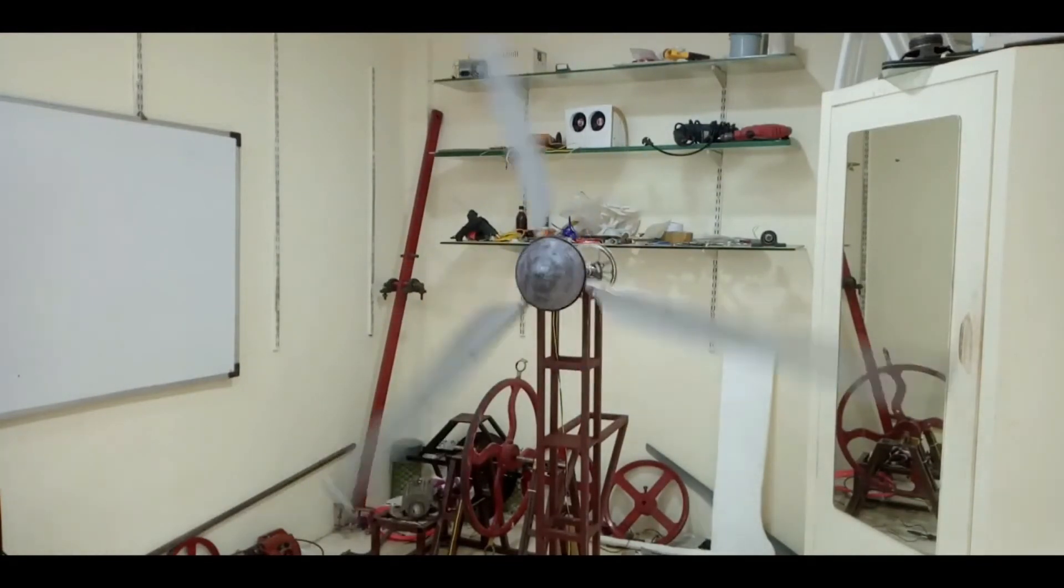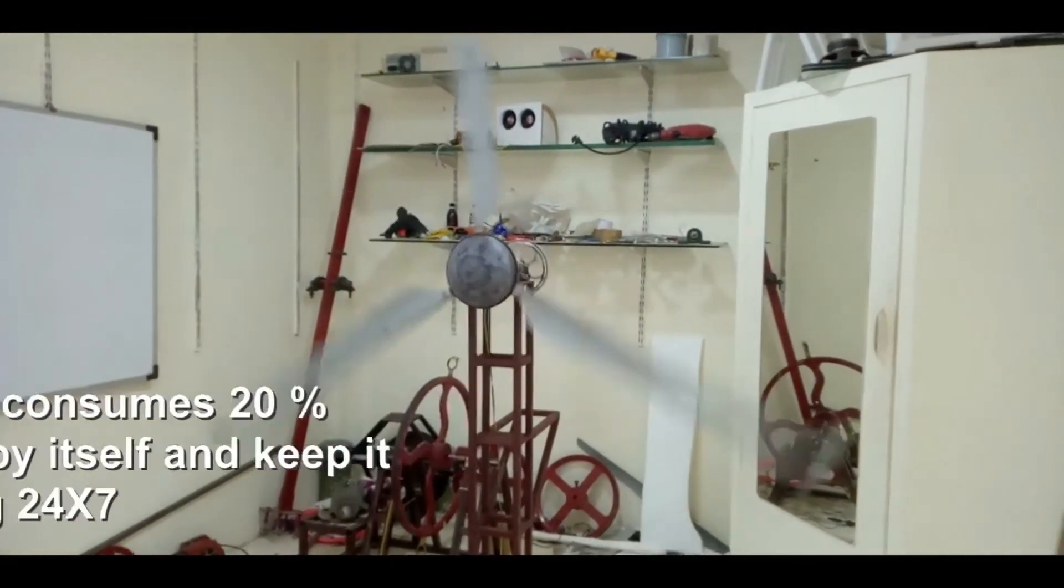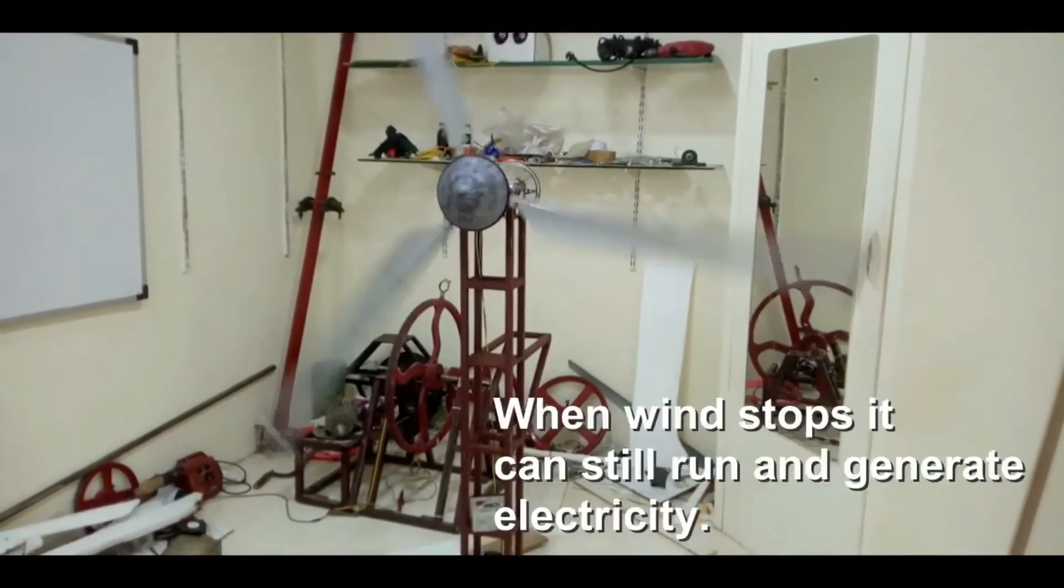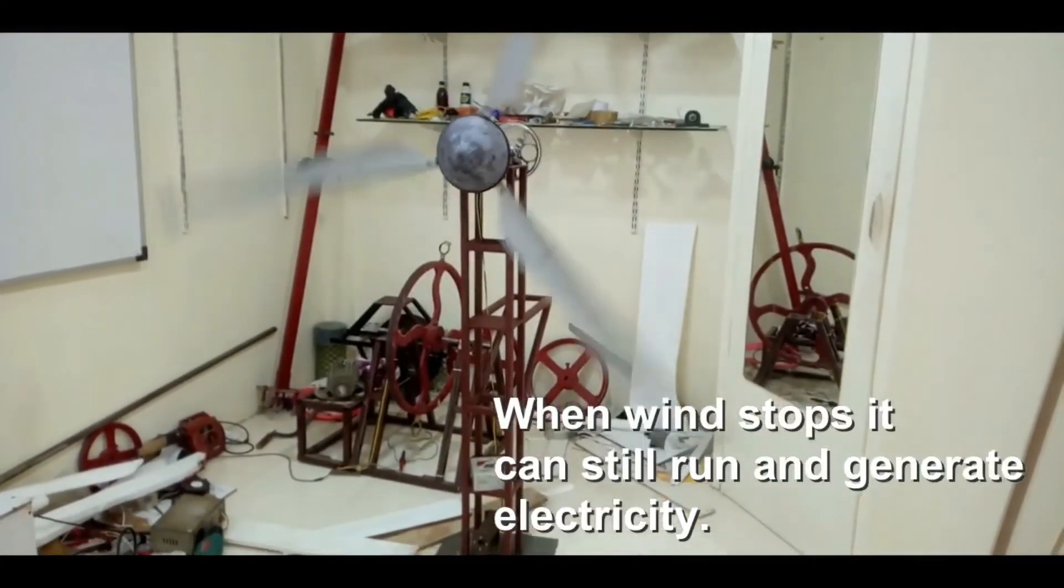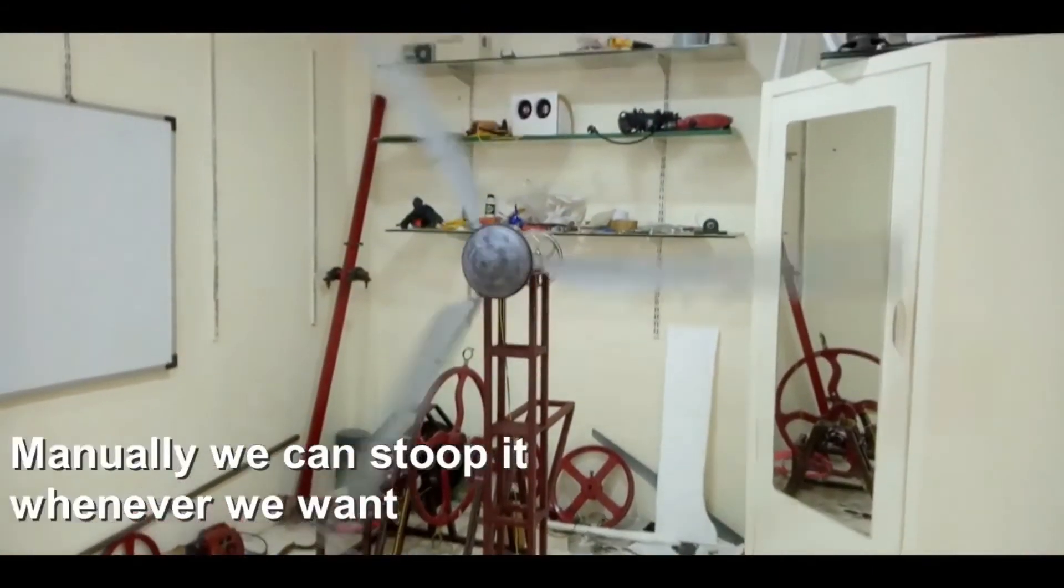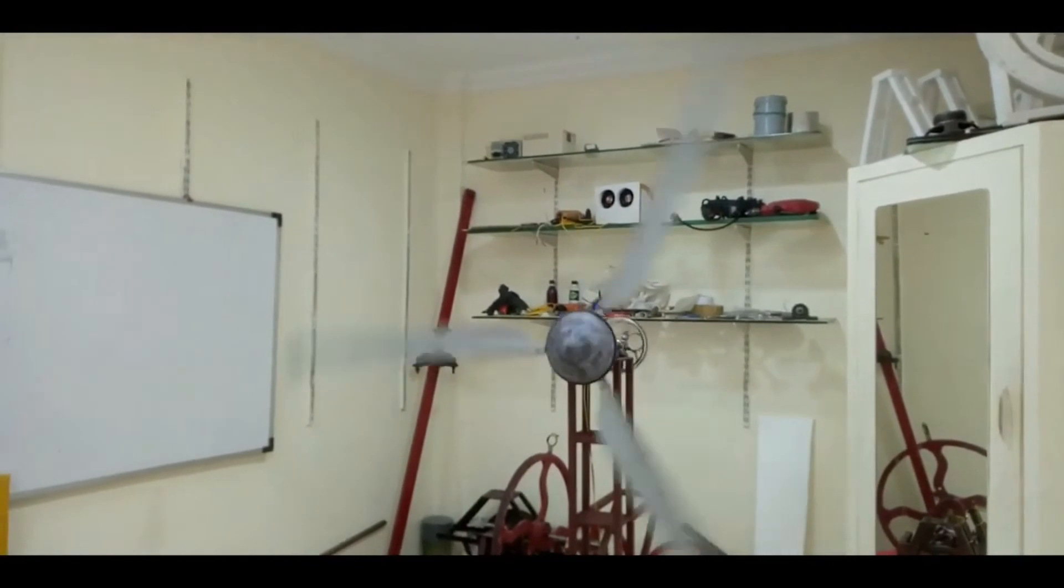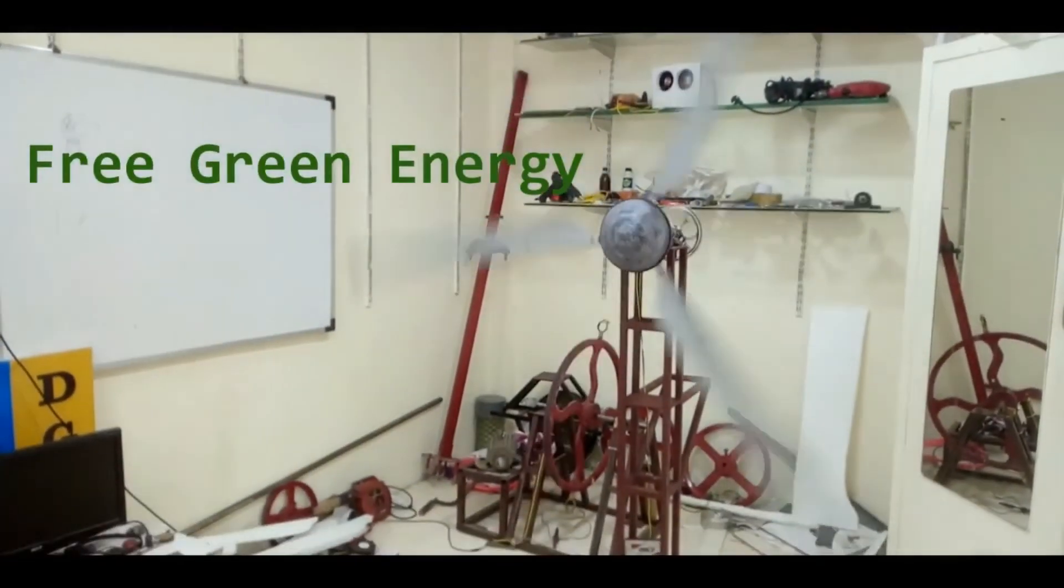This device can start generating electricity the same way a wind turbine or windmill generates. At first the plates of wind machine will start rotating with the help of wind, and as soon as it generates electricity, the wind machine will consume 20% of it and then it will start rotating by itself.